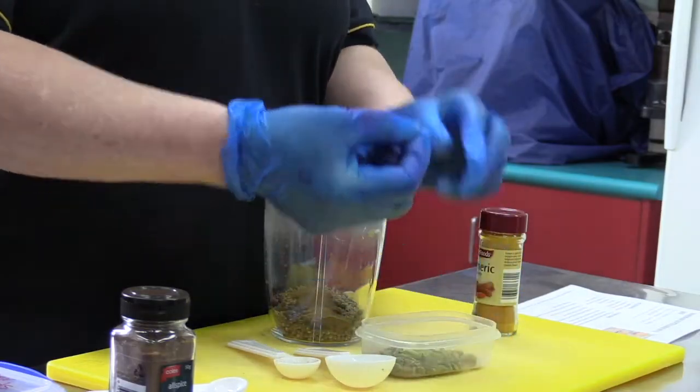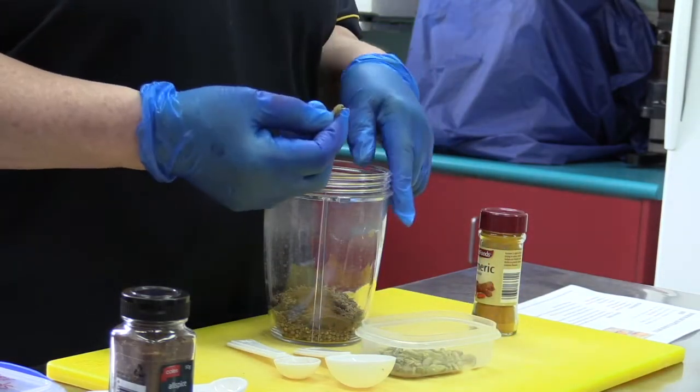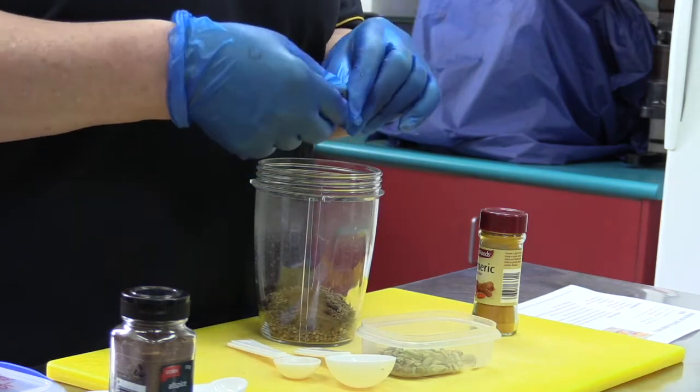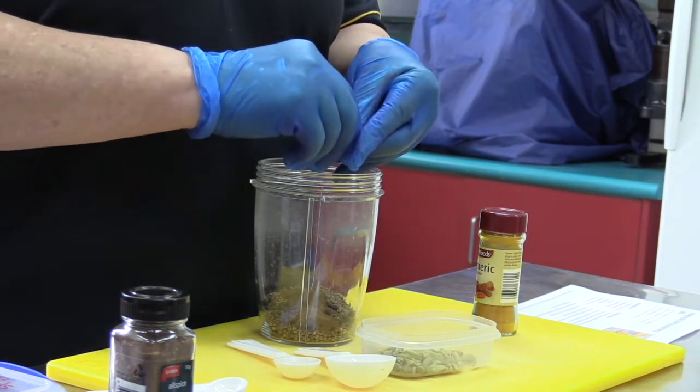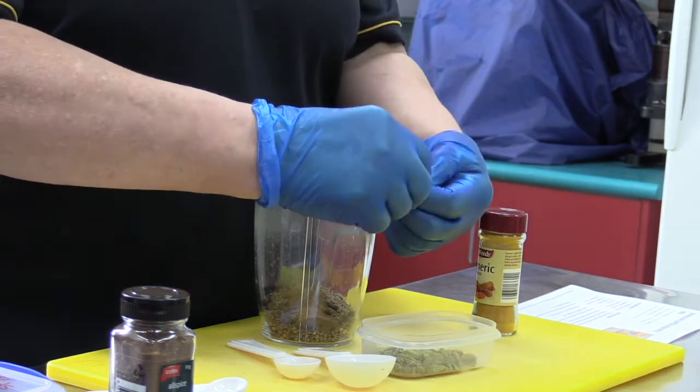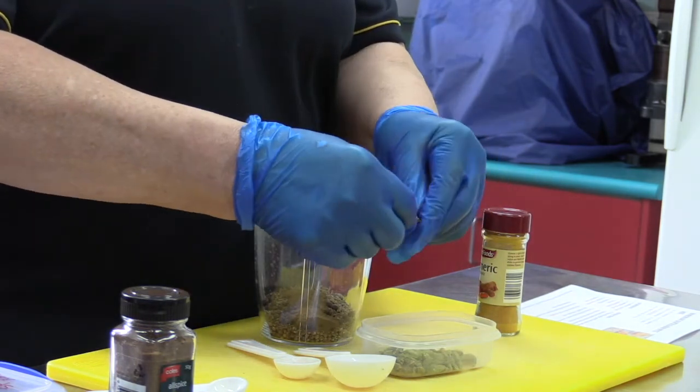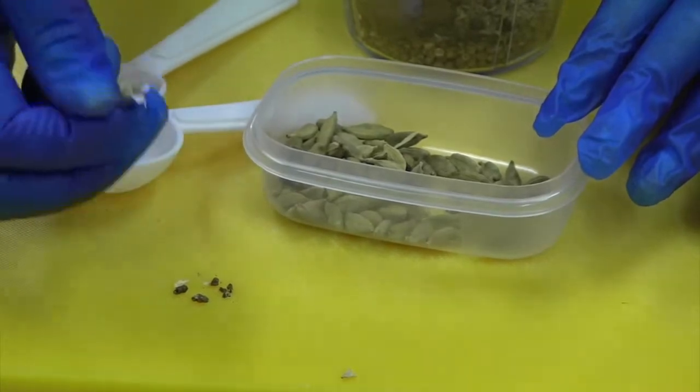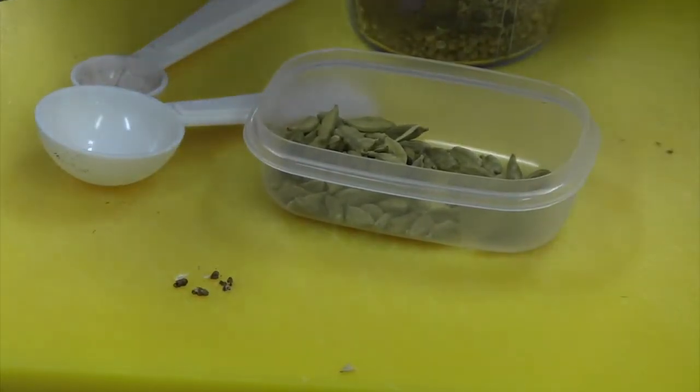Cardamom seeds. These are cardamom pods. The black ones are really better for this type of thing, but I couldn't find them. If you open them up, inside there are little tiny seeds. There they go. That pod is empty now, and these are the seeds.